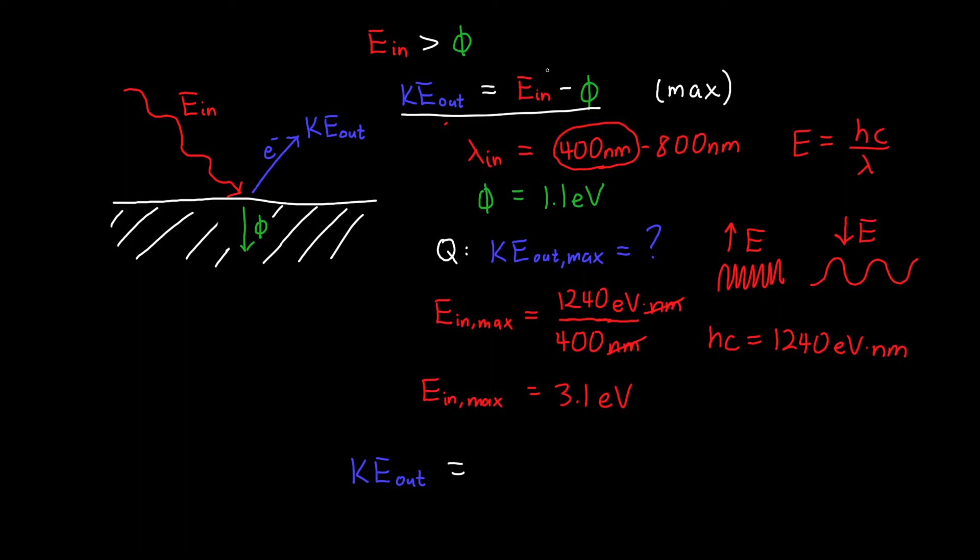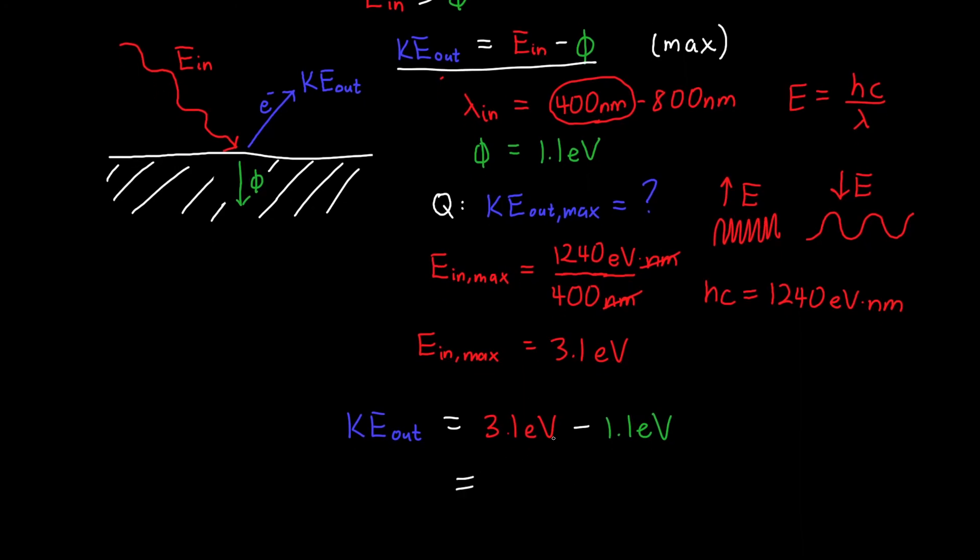is our E_in, which is 3.1 eV, minus our work function, which we said was 1.1 eV. And this is all equal to 3.1 minus 1.1, which is just 2 eV. So this is our maximum output kinetic energy. And this is our final answer.